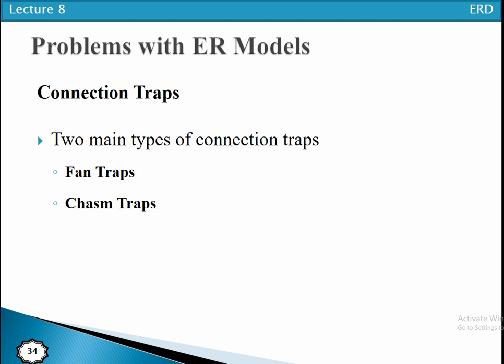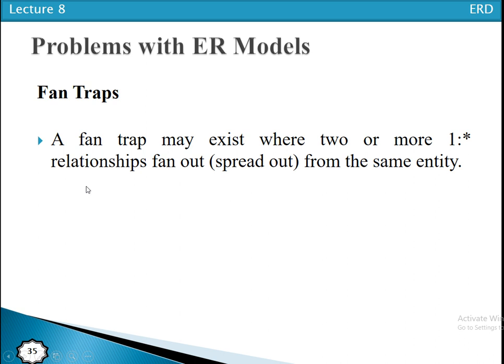The first type is the fan trap. A fan trap occurs when an ER model represents a relationship between entity types, but the pathway between certain entity occurrences is ambiguous. The relationship exists but the pathway is ambiguous among different instances of the entity type. A fan trap may exist where two or more one-to-many relationships are fanned out from the same entity.